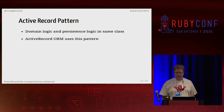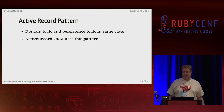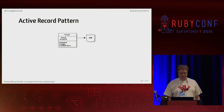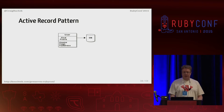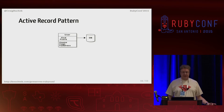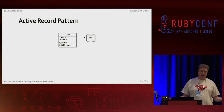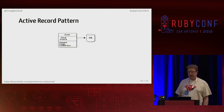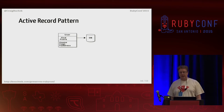Some terminology also comes from Eric Evans' book Domain Driven Design — another good book. Here's the UML diagram for the Active Record pattern. A few things to note: find is a class method, the object knows how to save itself, and the model is dependent on the database.